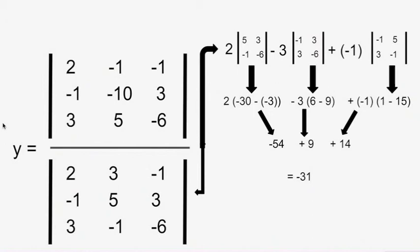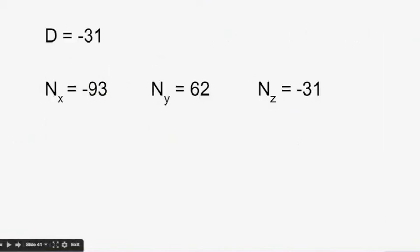However, I'm not going to solve nx, ny, and nz for you, because that would require so much time and it follows the same format. So the denominator equals -31, nx equals -93, ny equals 62, and nz equals -31.